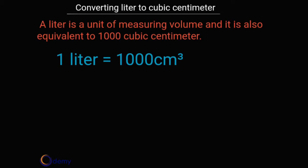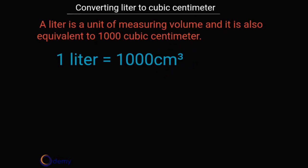So how do we convert liters to cubic centimeters? Cubic centimeter is also the same as centimeter cubed. To convert liters to cubic centimeters, we are going to multiply the value of the liters by 1000. We said one liter equals 1000 centimeter cubed.